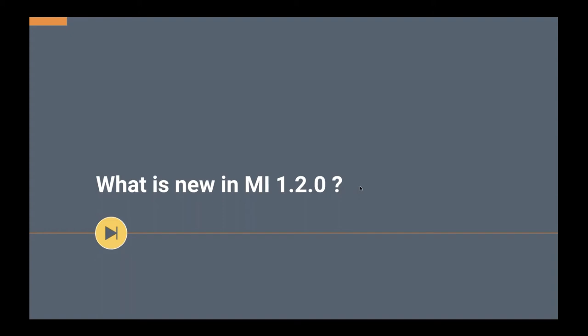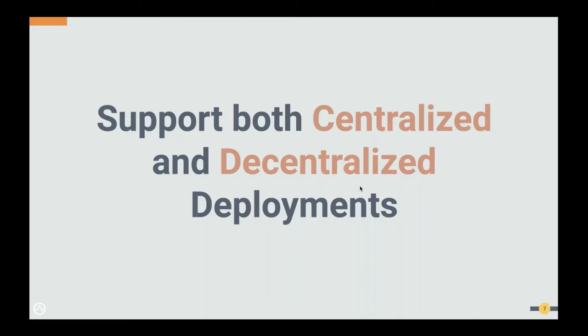Let's see what are the new improvements and features of the Micro Integrator new release, version 1.2.0. We developed an earlier version of Micro Integrator with the mindset that it would be used in container-based deployments, making it lightweight and optimized for microservices architecture. We then decided to extend support to work in both conventional ESB architecture and microservices architecture, so we added a set of features to make it happen. As a result, the Micro Integrator is now optimized to deploy in both centralized and decentralized deployments.